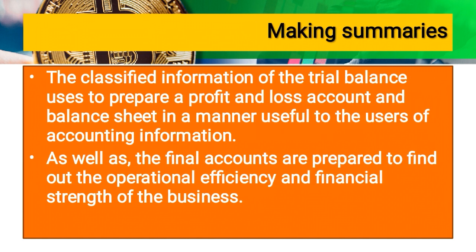Making summaries: after journal and ledger, we prepare a trial balance. The trial balance is used to check arithmetical accuracy — to verify that all journal transactions have been posted correctly to the ledger. If any transactions are missed in posting, the trial balance debit and credit totals will not match.